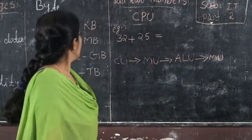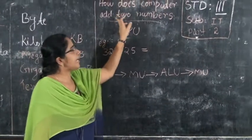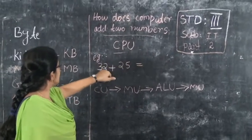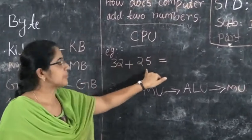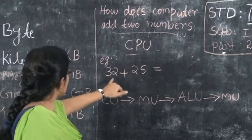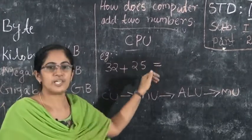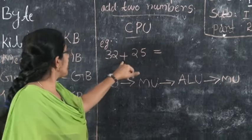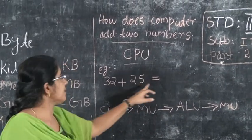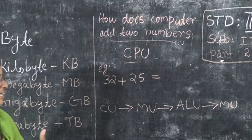For example, how does a computer add two numbers? Take 32 plus 25. Here, 32 and 25 are data, and the plus and equals signs are the instruction. This is how a computer adds two numbers.